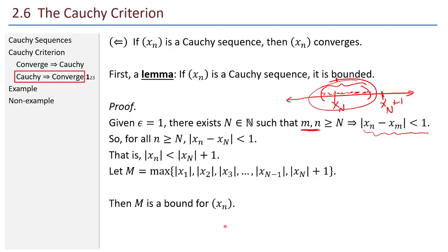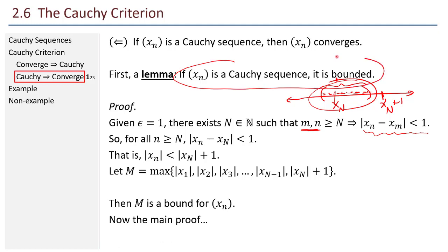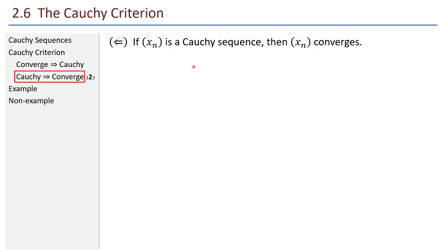I was a little fast and loose by not saying absolute value throughout, but what I said holds true with absolute values. So that's the lemma: if it's Cauchy, then it's bounded. Let's use that fact for the rest of the proof. I want to prove that if my sequence is a Cauchy sequence, then the sequence converges.